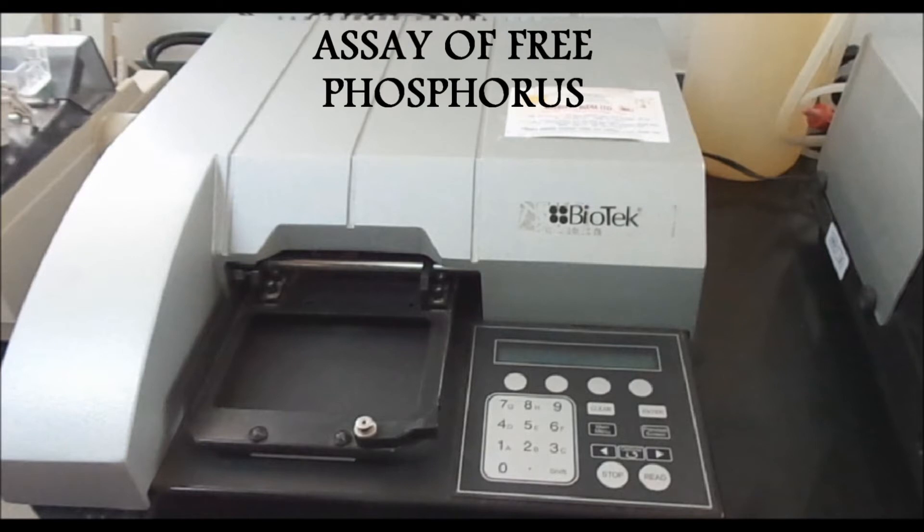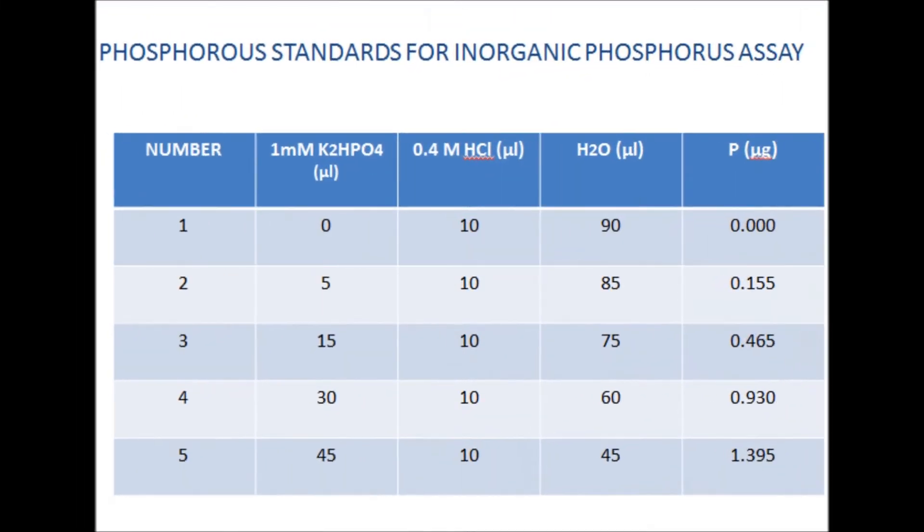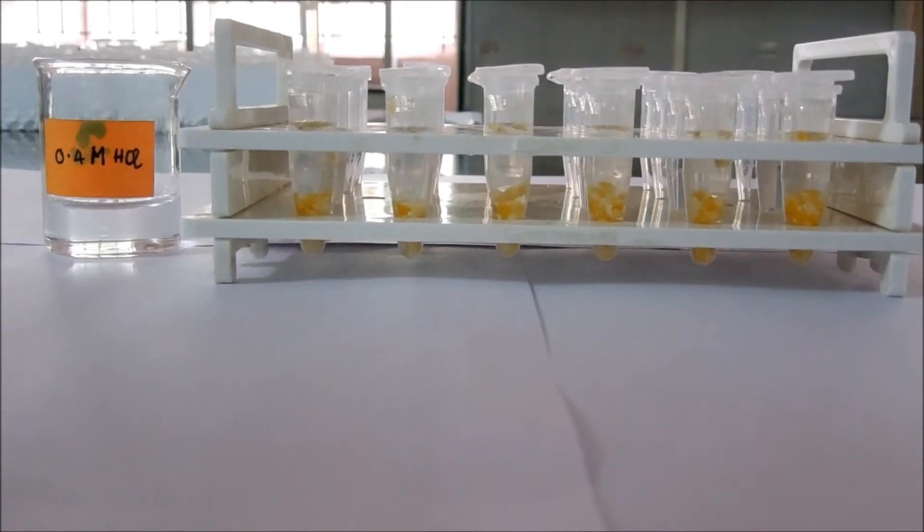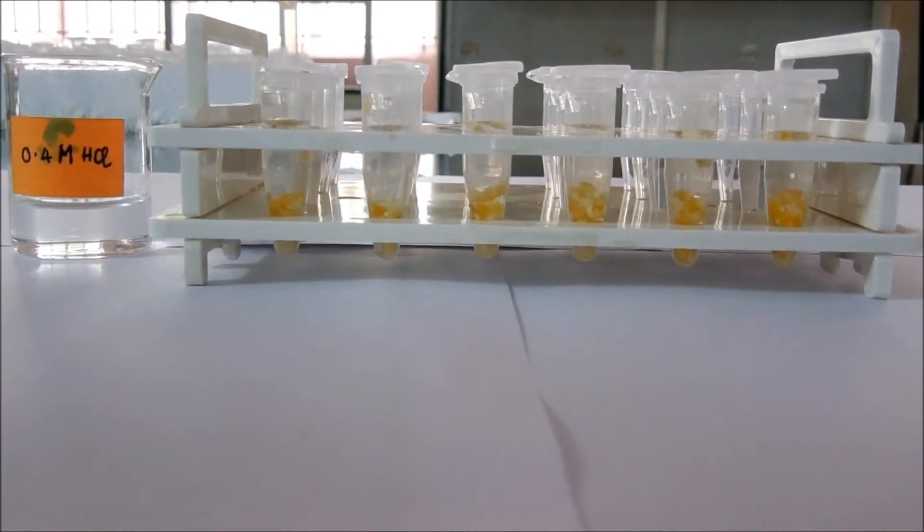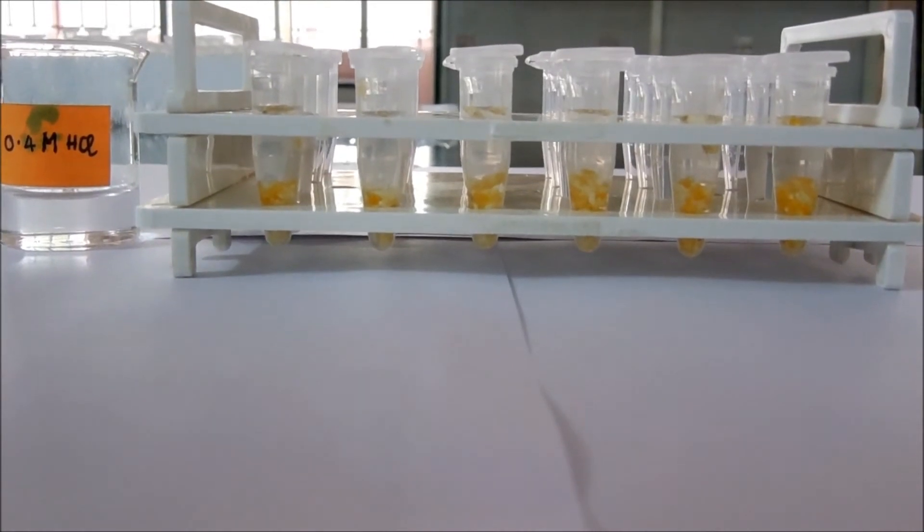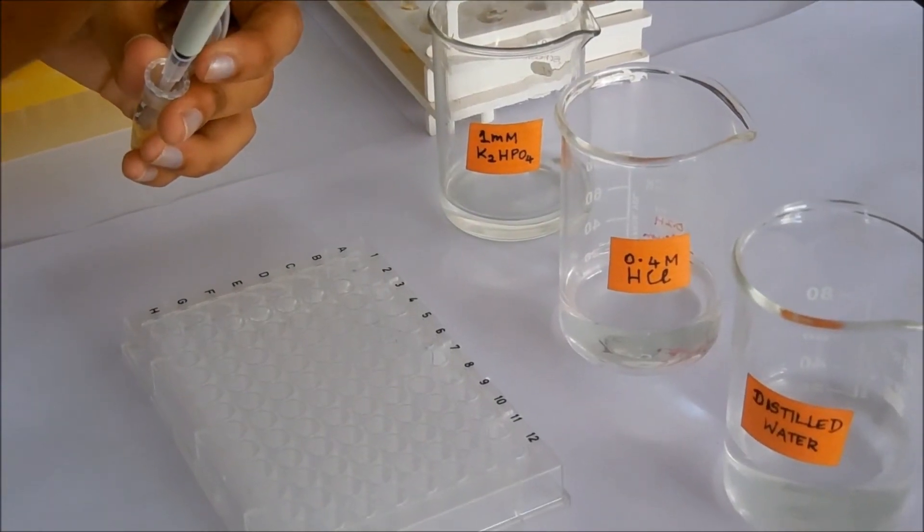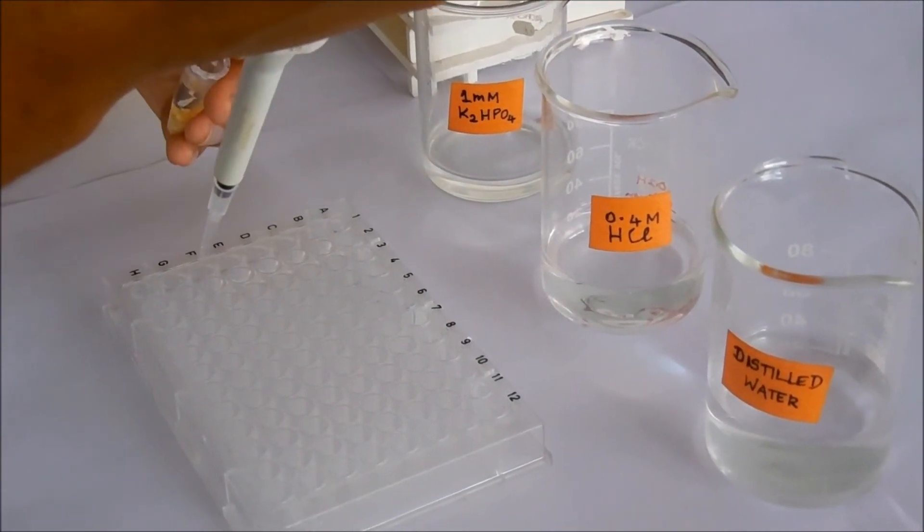Assay of free phosphorus using ELISA reader: The phosphorus standards were prepared accordingly. 100 mg of maize seeds were taken and extracted with 1 ml of 0.4 molar HCl for 1 hour at room temperature.